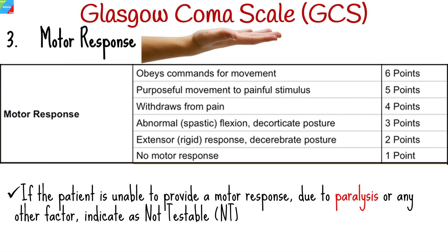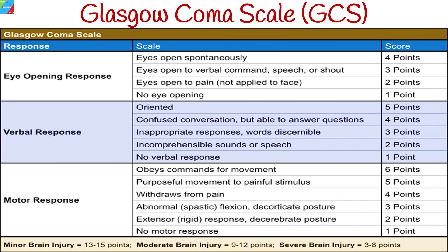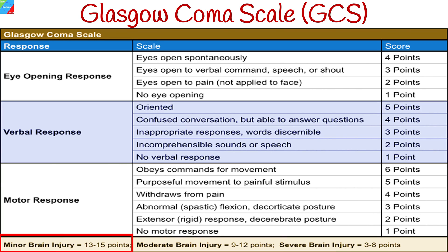The final GCS score or grade is the sum of these numbers. The GCS should be documented showing the score for each individual behavior tested. Every brain injury is unique; however, in general, brain injuries are categorized as follows: severe brain injury is a GCS of 8 or less, moderate brain injury is a GCS of 9 to 12, and mild brain injury is a GCS of 13 to 15.